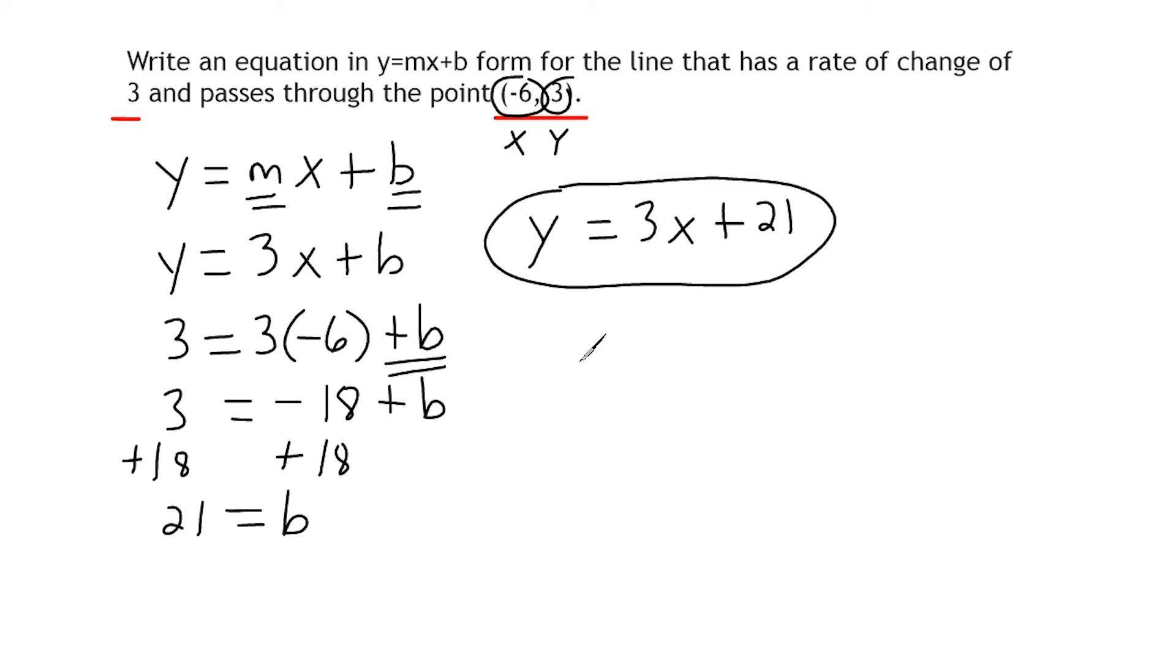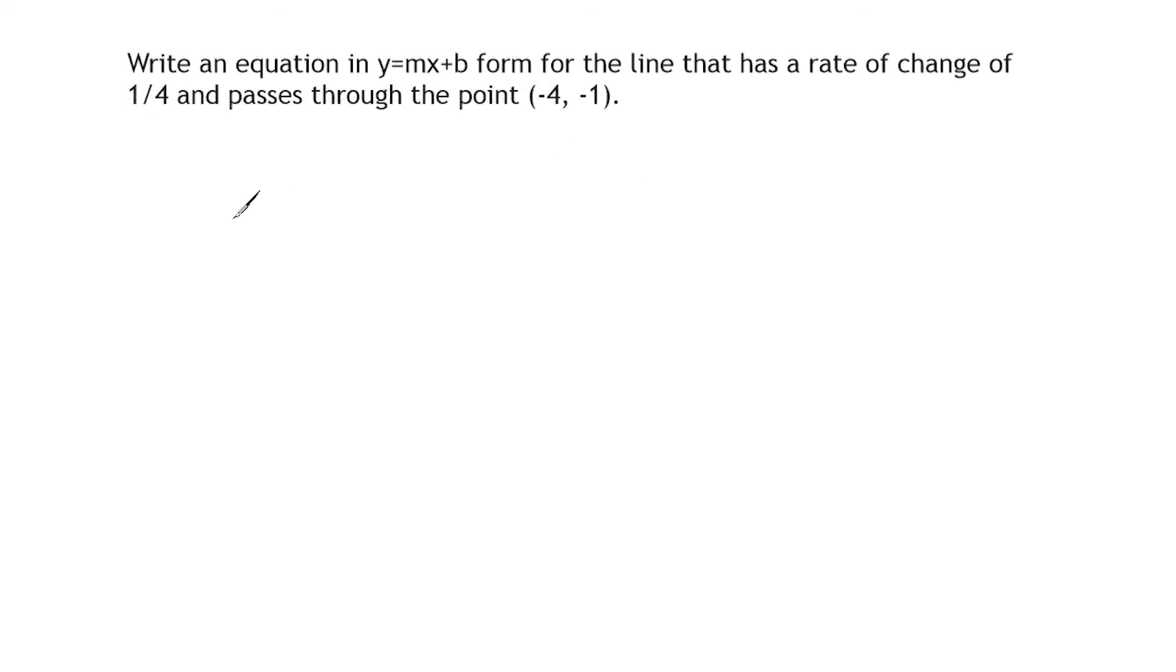All right, let's go ahead and do another example. Okay, so this time we have a rate of change that is one-fourth and the line is passing through negative 4 and negative 1.